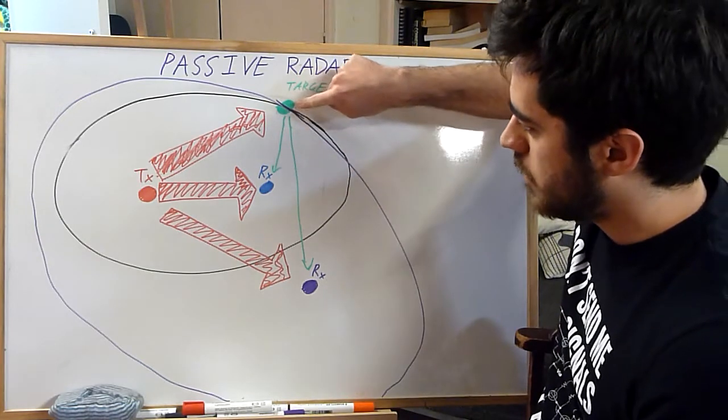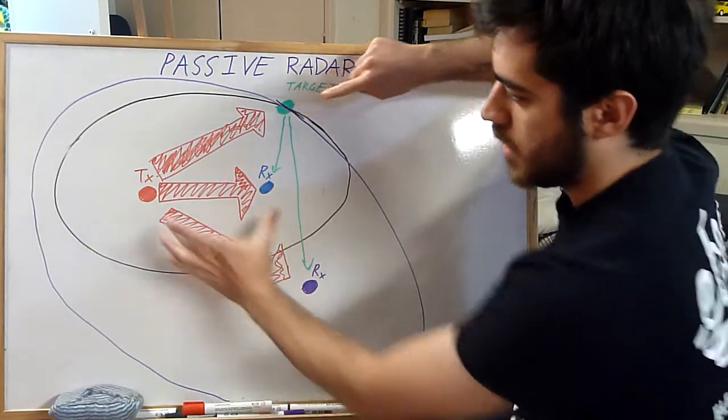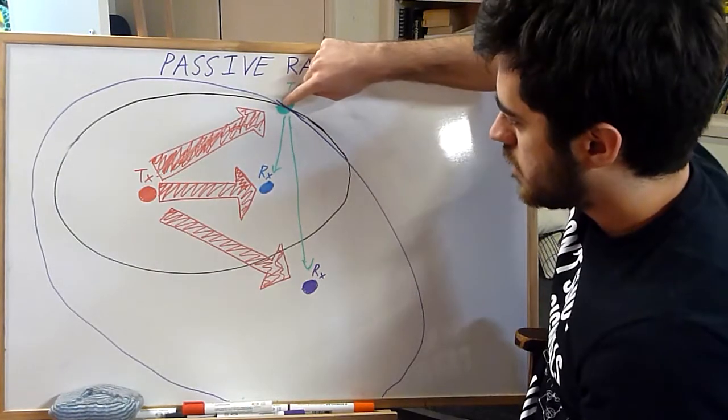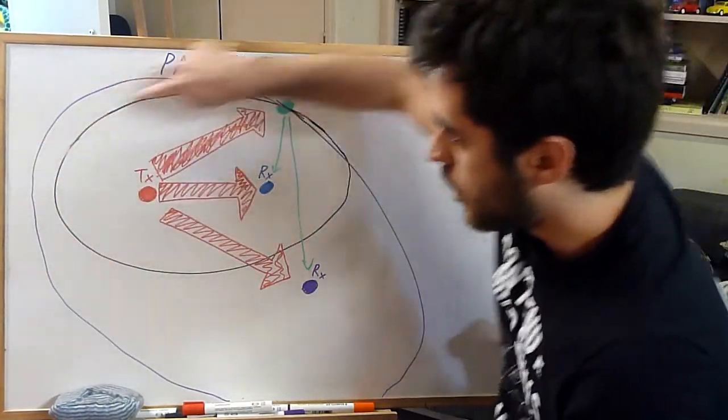So you can see here if we've got a point on an ellipse, say these are the two foci of an ellipse, this target could lie anywhere on this ellipse.